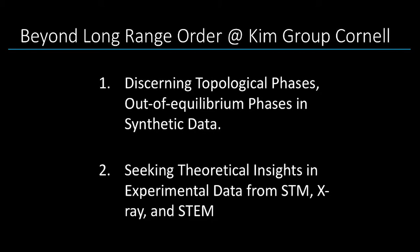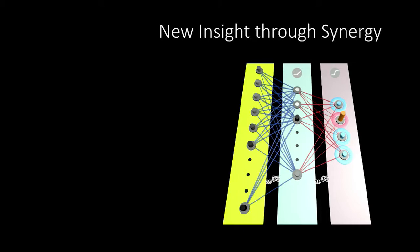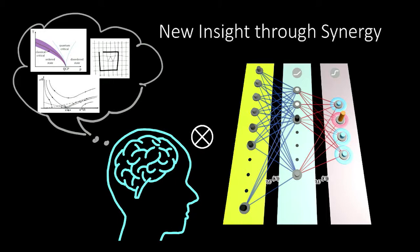What we've been focusing on is in synthetic data or simulated data discerning topological phases or out of equilibrium phases where what we now call traditional mode of regression, that is the order parameter, is not available. And we've been also working on seeking theoretical insight from experimental data. I'm going to talk a little bit about STM data analysis that is in preprint at the moment. But we are also having a lot of fun working on x-ray data analysis as well as scanning transmission electron microscopy.